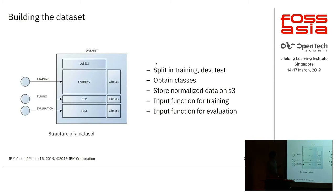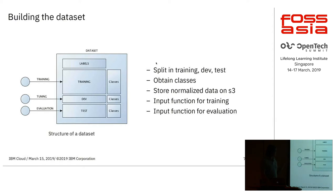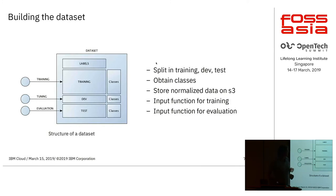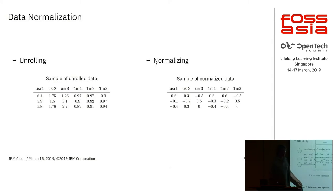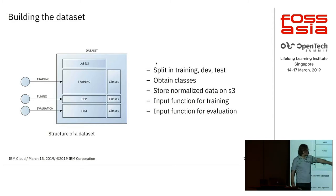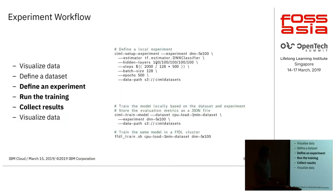Another thing to take care of when building the data set: do not use everything for training. It's important to train your model, but it's also important to have an evaluation phase where you test how accurate the model is in predicting what you want, and you may also want a small dev data set for fine-tuning hyperparameters. Note that 'labels' is a bit overloaded as a word — here it simply refers to the names of the features like USR_1, USR_2, while 'classes' refers to the values of the things we want to predict. Data sets are also stored in S3 storage.